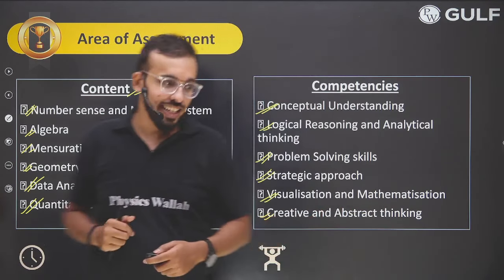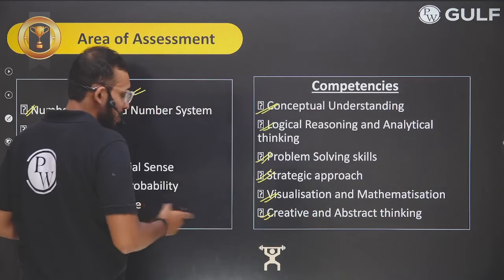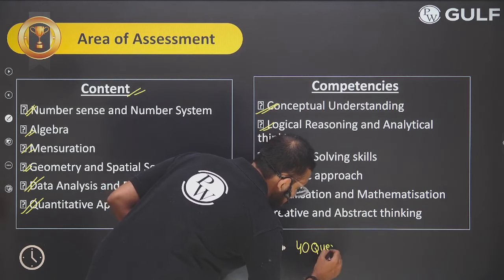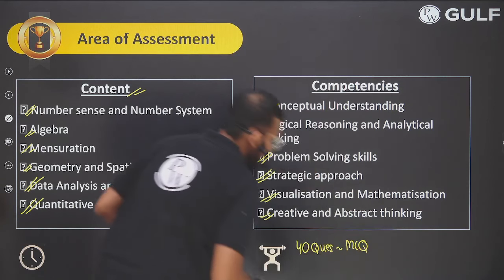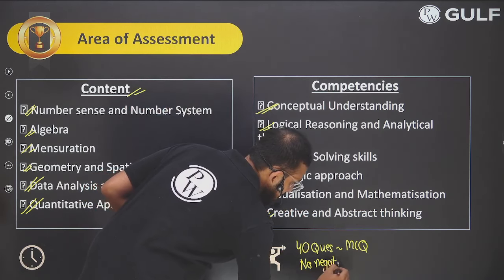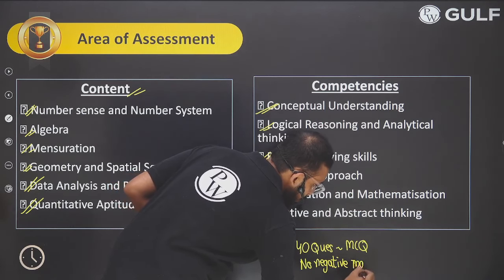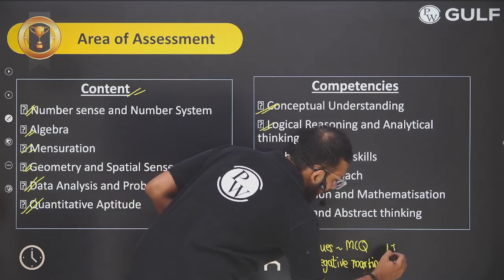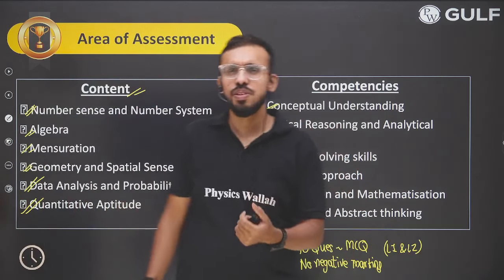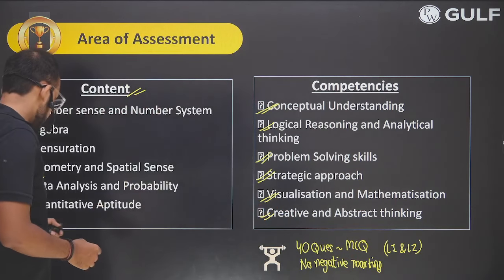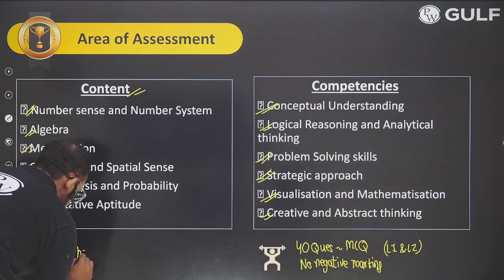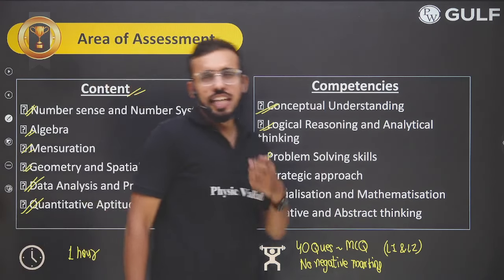One more important thing regarding weightage: previously there were 40 questions, all multiple choice MCQ-based, and there was no negative marking in both Level 1 and Level 2. The total weightage was 40 questions for 40 marks. The time duration is one hour — that is 60 minutes.